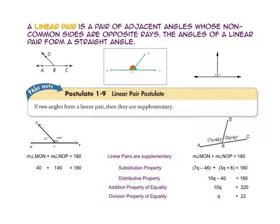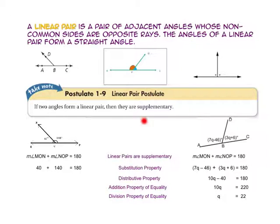A linear pair is a pair of adjacent angles whose non-common sides are opposite rays. The angles of a linear pair form a straight line. If two angles form a linear pair, they are also supplementary — meaning they have a combined measure of 180 degrees.